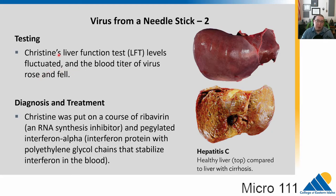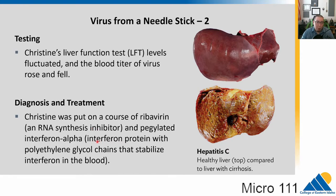They test her liver function and the levels fluctuate. They look at blood titers of the virus — basically how many viral particles are in the blood — and those go up and down as well. They're going to prescribe treatment: ribavirin and pegylated interferon alpha. Ribavirin is an RNA synthesis inhibitor, and pegylated interferon alpha is a protein that helps boost the immune system.